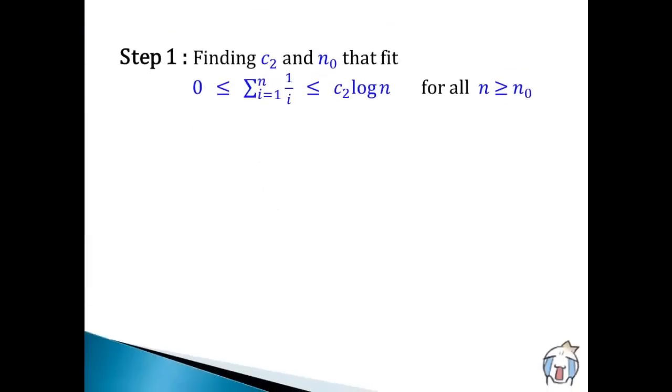From previous slide, we got this. Because the sum of the first n terms of harmonic series is not greater than log n base 2 plus 1, we'll find c2 and n0 from this inequality instead. And the same c2 and n0 will fit our main inequality too.